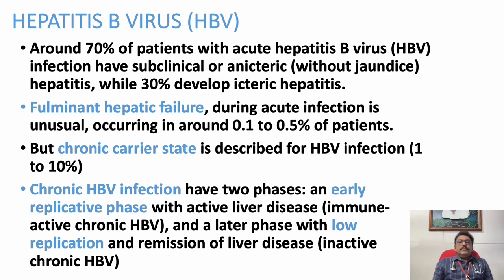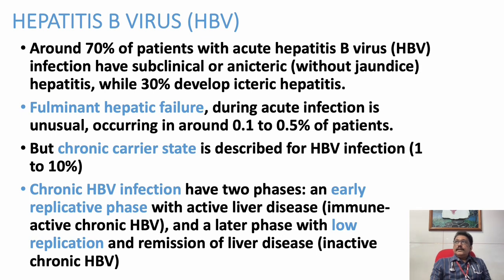Most patients with Hepatitis B infection are asymptomatic without jaundice. Around 30 percent develop jaundice. Very rarely, around 0.1 to 0.5 percent develop fulminant hepatic failure — severe hepatic failure in a very short interval. Chronic carrier state is described in 1 to 10 percent of patients; some will carry the virus in their body, spreading it throughout their lifetime.